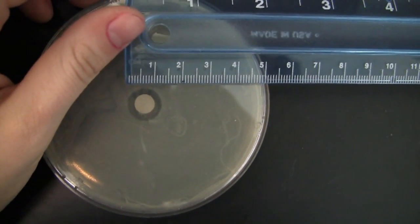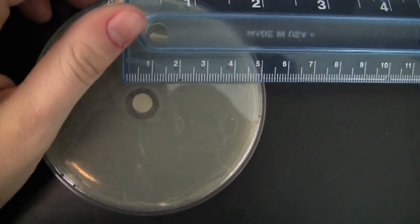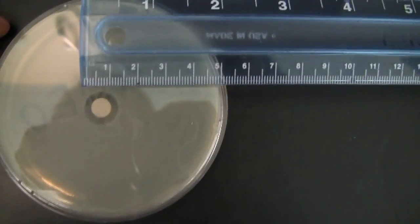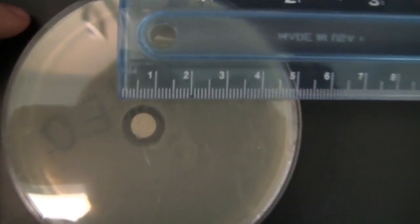Here is the basil essential oil. There are no colonies within the zone of inhibition, but it is a clear solid ring around the filter disc.